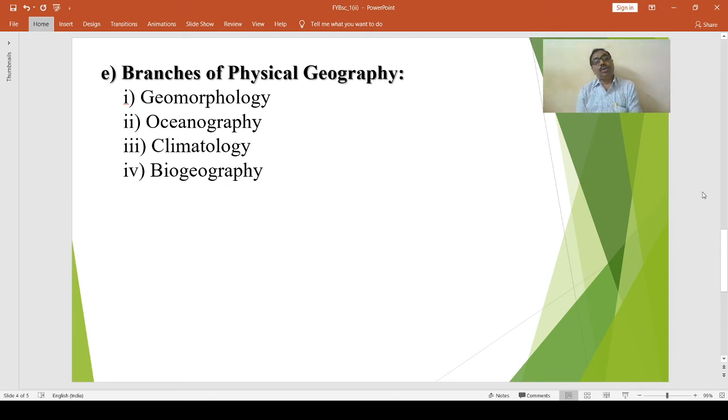Then oceanography. As we know, about 70.8% surface of the earth is covered by water, and that water-covered surface of the earth is called hydrosphere. Here we have to study about this part of the earth's surface, that is the hydrosphere, and here we have to say oceanography. The study of hydrosphere is called oceanography, which includes physical and biological aspects of hydrosphere.